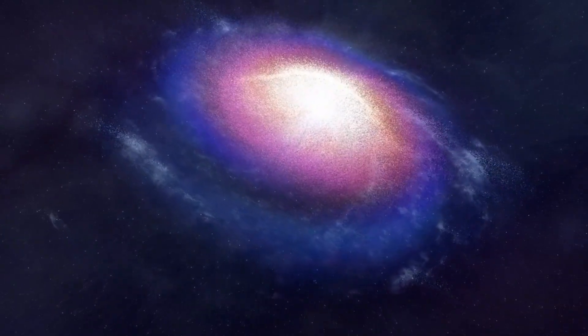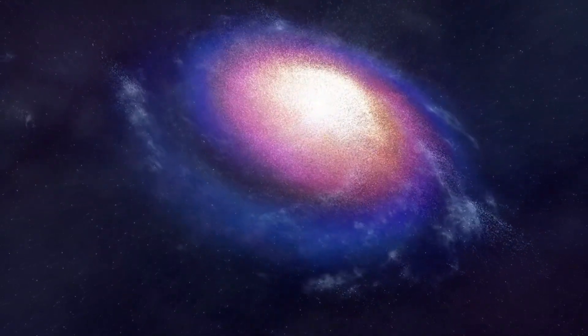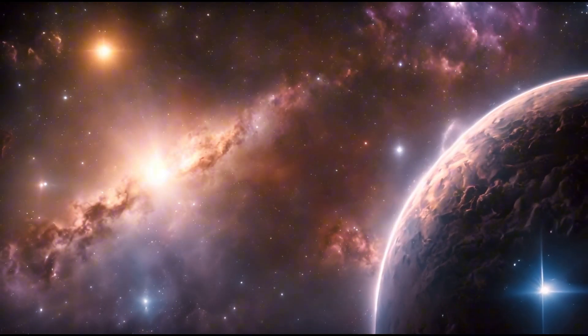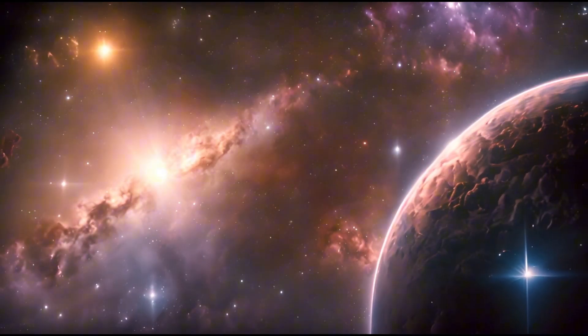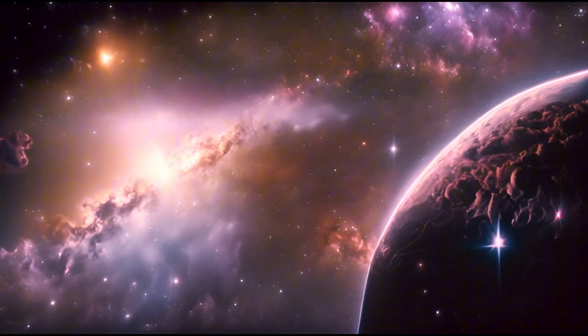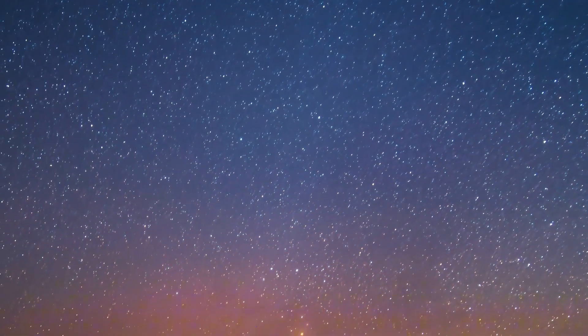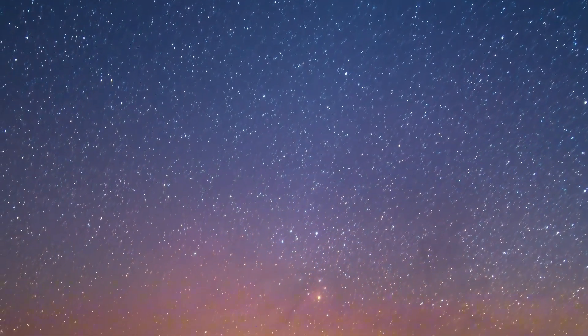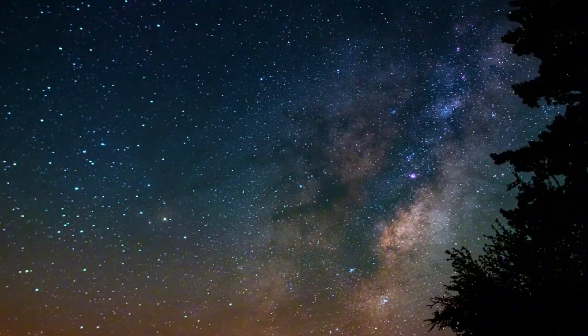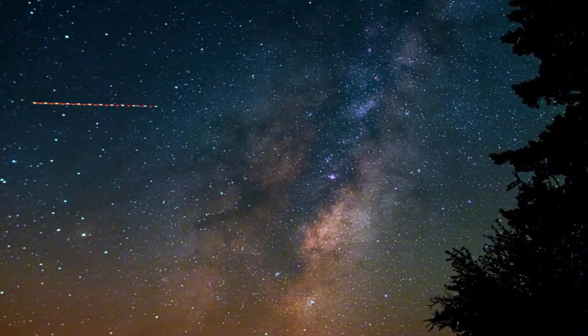Betelgeuse's unpredictable behavior sparked discussions about the potential for an imminent supernova explosion. In a supernova, as the star consumes its remaining fuel, its core collapses, giving rise to a black hole while expelling outer layers at speeds of up to 25,000 kilometers per second. If Betelgeuse undergoes a supernova explosion, it would be a breathtaking display visible for several weeks, similar to the full moon due to its proximity of just 650 light years.